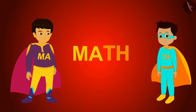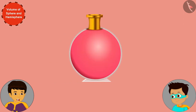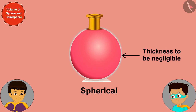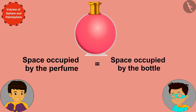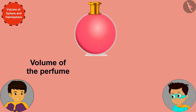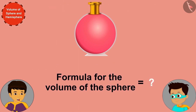Thomas, the part of the perfume bottle in which the perfume is filled is spherical. Because the bottle is made of thin glass, we would consider its thickness to be negligible. Therefore, the space occupied by the perfume in the bottle is equal to the space occupied by the bottle — in other words, the volume of the perfume will be equal to the volume of the spherical bottle. Do you remember the formula for the volume of a sphere?